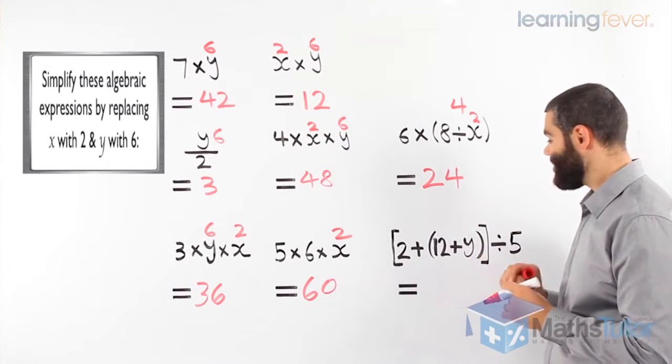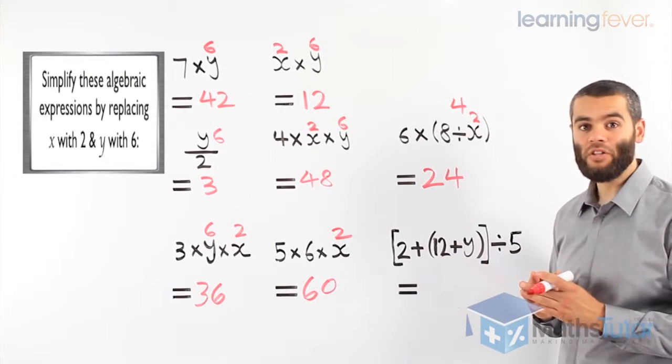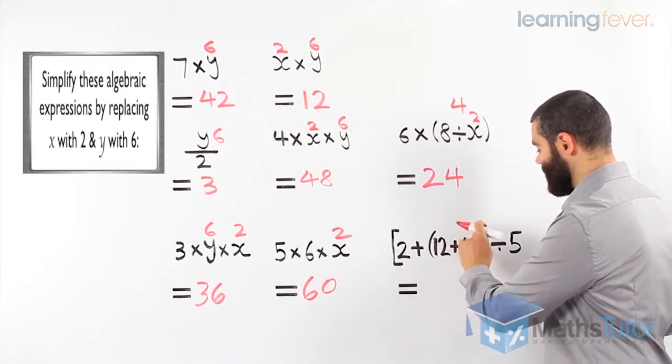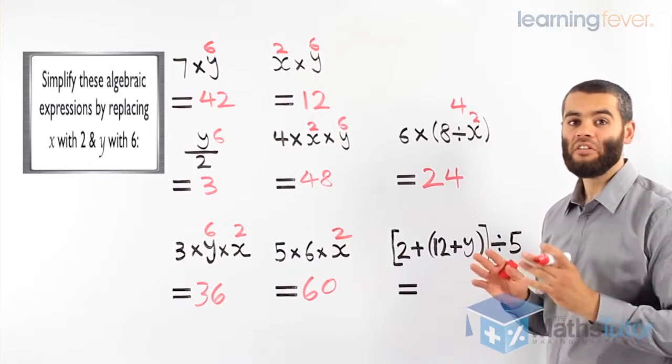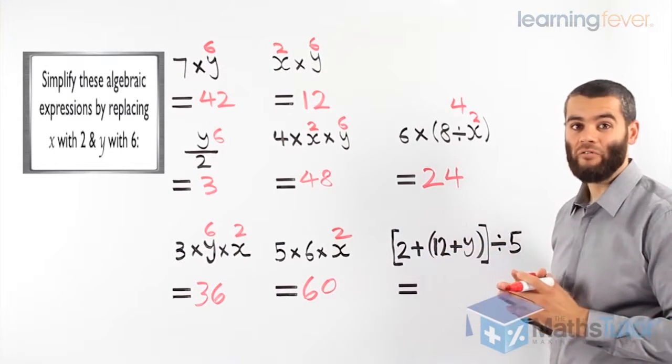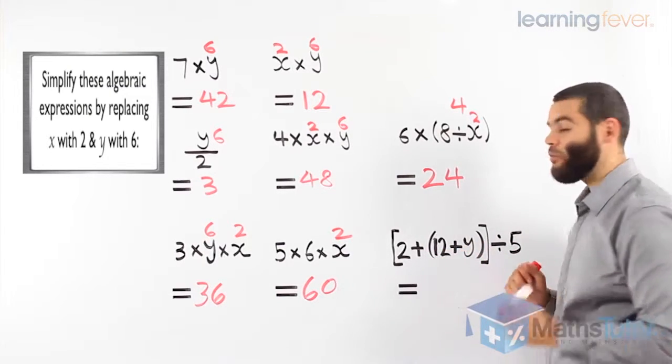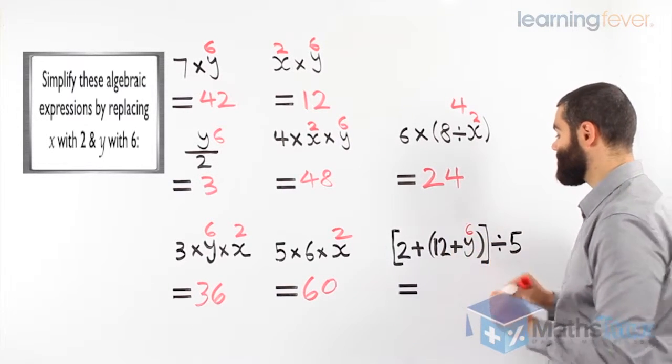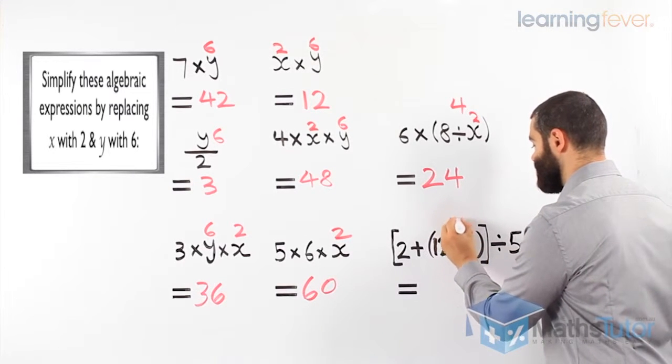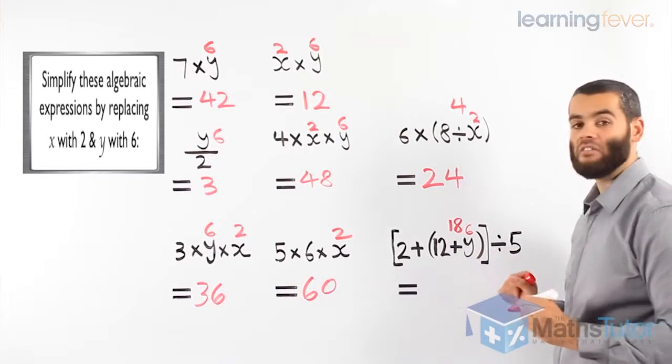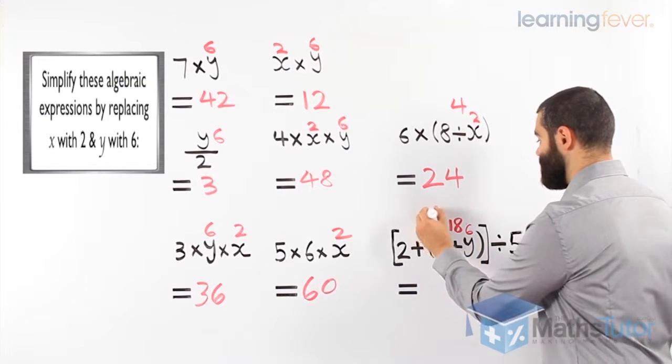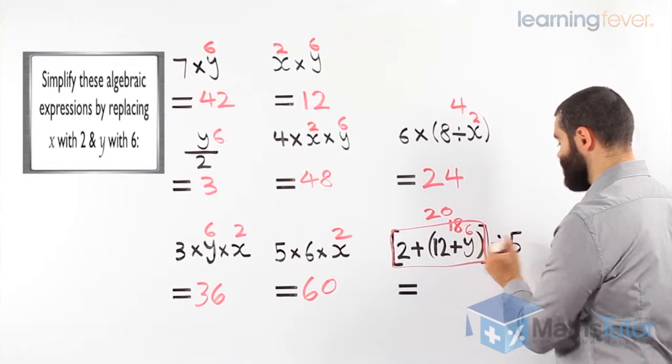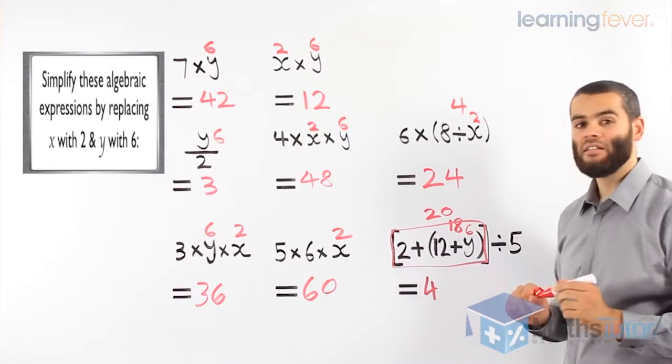Last example now. We can tell that we have another algebraic expression. We have 12 plus y all inside, then 2 plus everything inside, and then divide by 5. We always start using the order of operations with the brackets inside first. 12 plus y. We know that y is 6. Replace the y with a 6. 12 plus 6 is 18. We've completed the bracket inside. 2 plus 18 is 20. That's the answer for everything inside the brackets. 20 divided by 5. Our answer is 4.